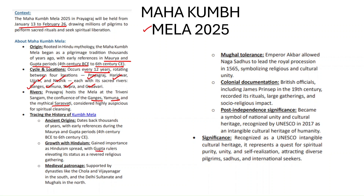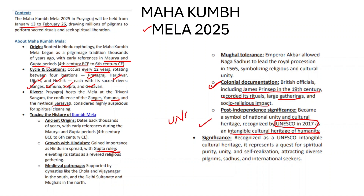During the Gupta period, rulers propagated Hindu culture, and the Maha Kumbh Mela received a lot of patronage. In colonial documentation, James Prinsep in the 19th century recorded its rituals, large gatherings, and social-religious impacts. Post-independence, UNESCO recognized the Kumbh Mela in 2017 as an Intangible Cultural Heritage of Humanity.